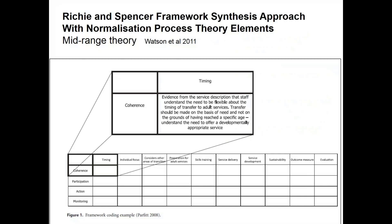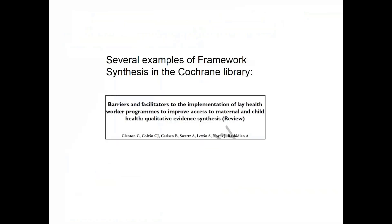For those who like theory, here's another example using Normalization Process Theory — an implementation theory about staff and professional behaviors in implementing an intervention. It has all the particular factors around staff and implementation, and again the evidence is picked out from individual studies to populate it. Do go back to guidance on how to pick a theory to make sure you've got the most appropriate one.